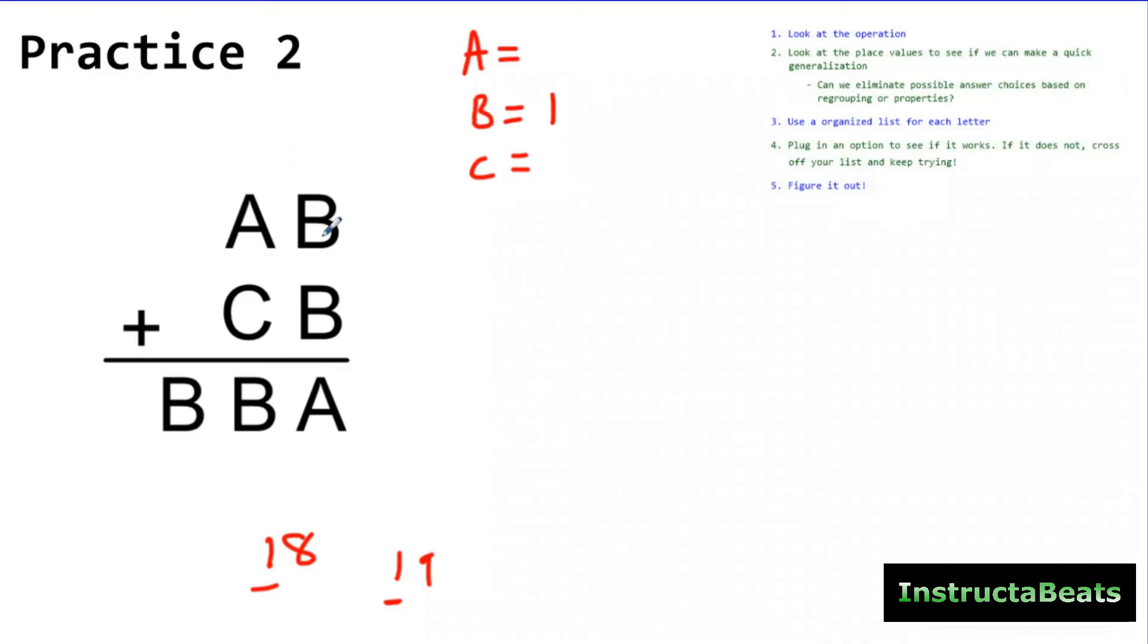So now I know that B equals 1. I've already figured one out just by making a generalization. And because I know that already, if I make each of these a 1, I know A has to be 2. So I've already figured out B and A just by knowing about regrouping and making a generalization.